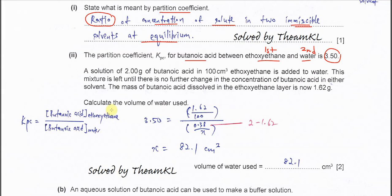The question asks you to calculate the volume of water used. We can use the KPC expression with the concentration of butanoic acid in the two layers. We can use grams instead of moles because butanoic acid is the same in both solvents, so we can straight away use grams.